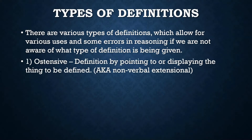Here is one way to define a word: by ostensive definition. An ostensive definition is done by pointing to, or showing, or displaying the thing that is to be defined. This is also known as non-verbal extensional.